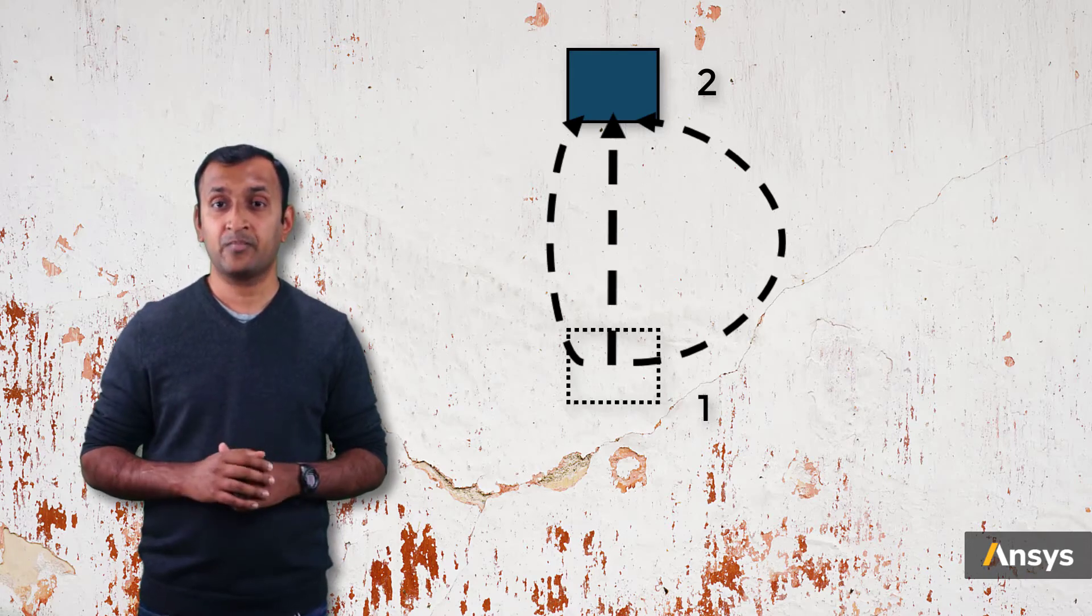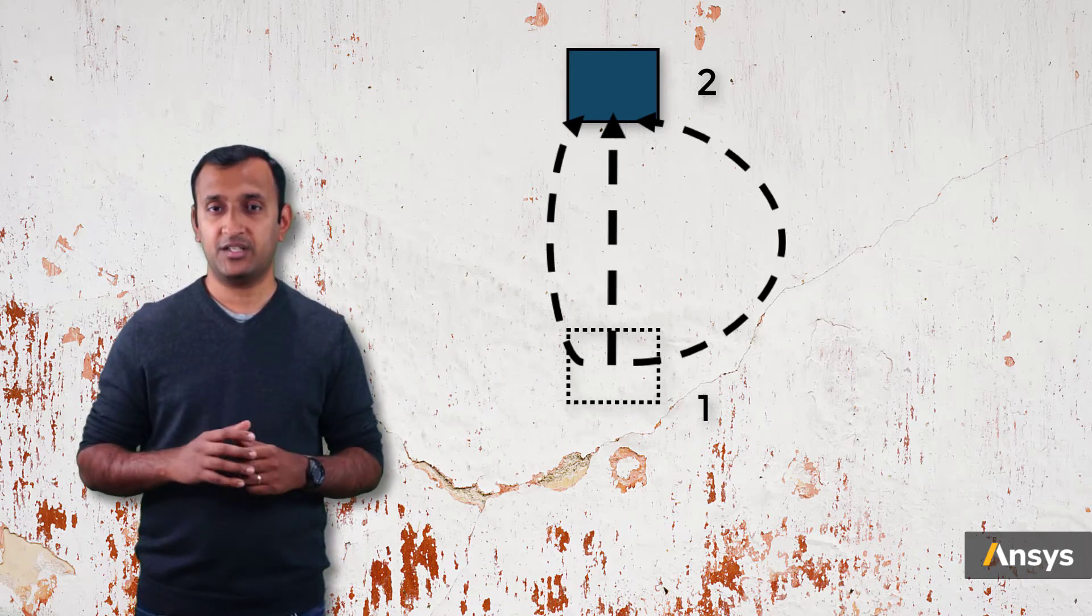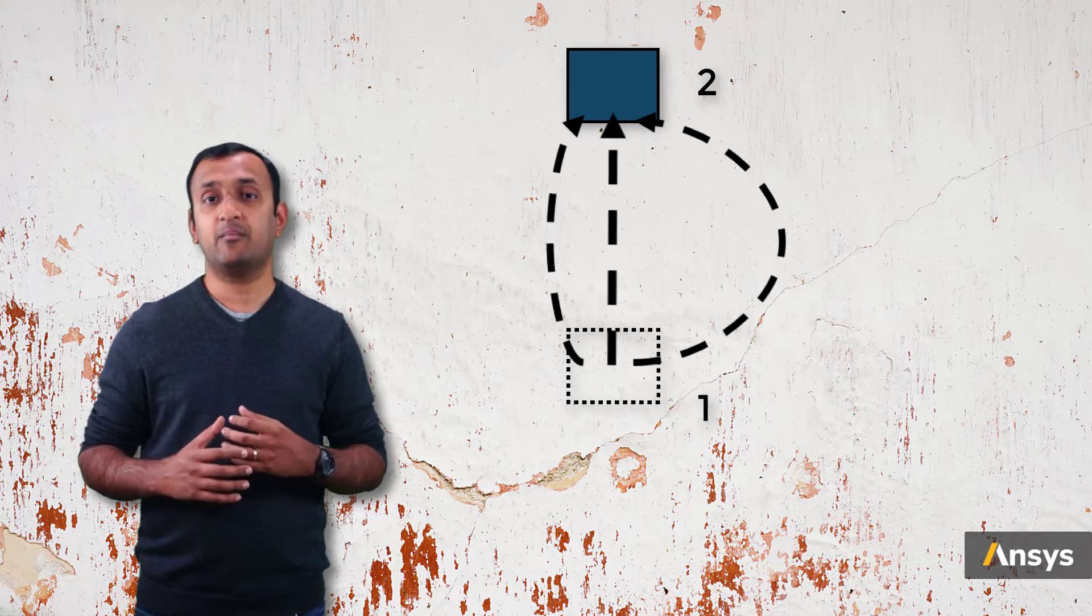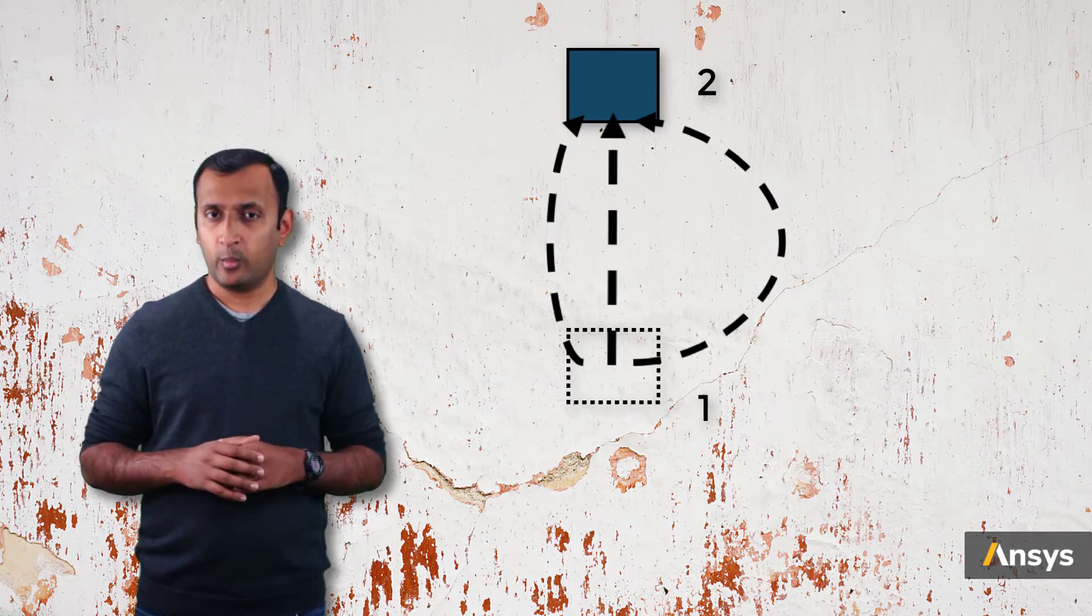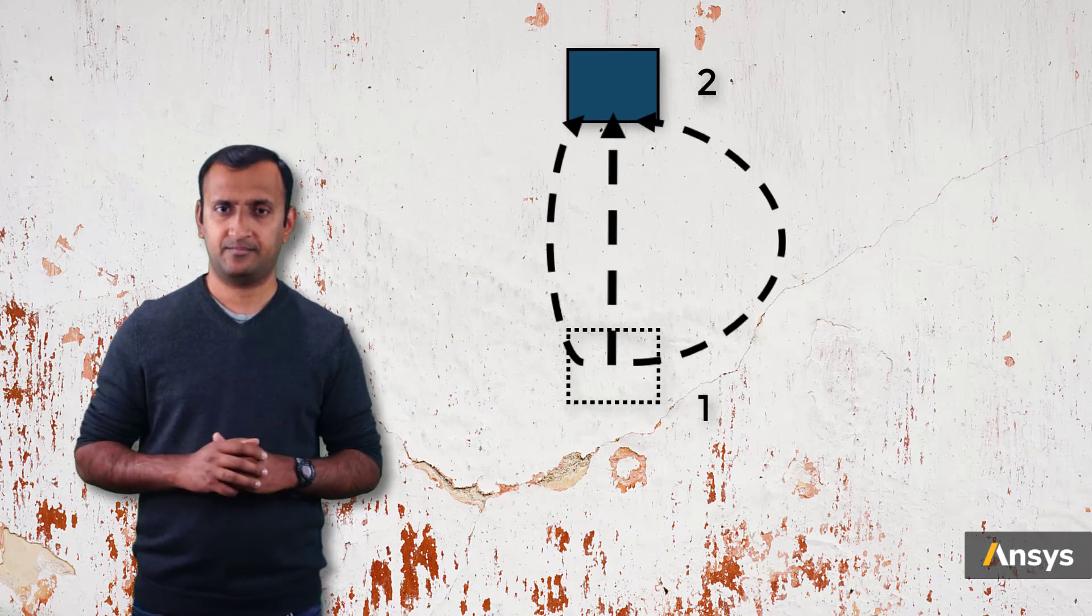In other words, the behavior of the system changes depending on the path taken by it between the starting and end points, which are the same in all three paths. This is nothing but path dependency. Due to this path dependency, it's important to follow the correct sequence or path during an assembly process.